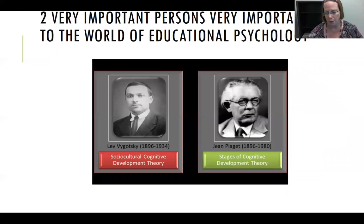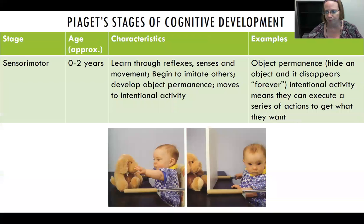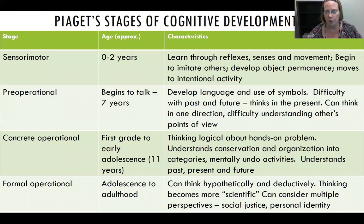Let's start with Piaget. Piaget was concerned with how people, in particular children, developed over time. He believed that development could be categorized into four stages: the sensory motor, the pre-operational, the concrete operational, and the formal operational. In Piaget's theory, these stages are tied to particular ages. It's important to note, however, that these ages are not exact, and if we follow our principles of development, we know that not everyone will fall neatly into these age brackets.